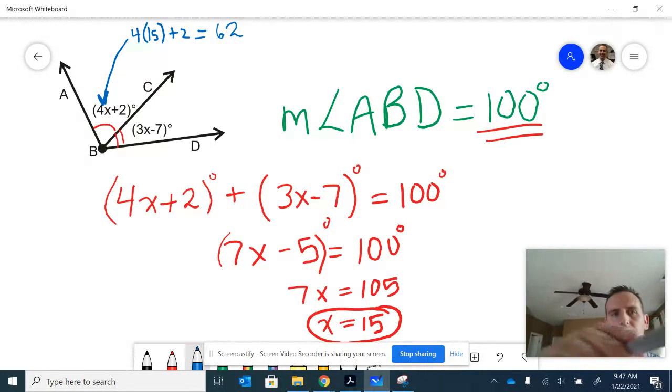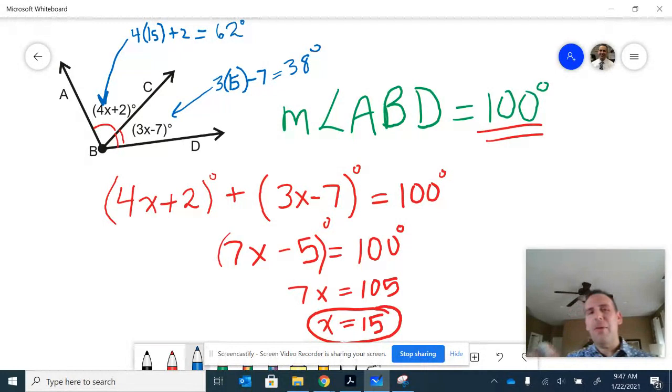And then this angle here can be found by 3 times 15 minus 7, which would be, I believe, 38. I'm going to check my math there for a second. And it seems to work out because 62 plus 38 would in fact be equivalent to 100 degrees. So you can do some final labeling there.